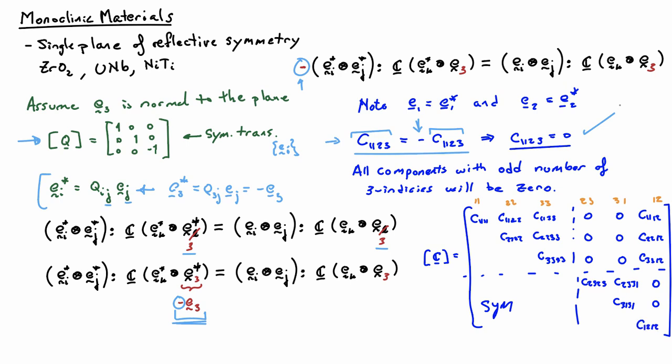Instead of needing 21 elastic moduli, eight of them have to be zero. 21 minus 8 gives me 13. So there are 13 unique elastic moduli needed to define a monoclinic material, meaning essentially 13 unique experiments need to be performed to fully define the elastic moduli for a monoclinic material.